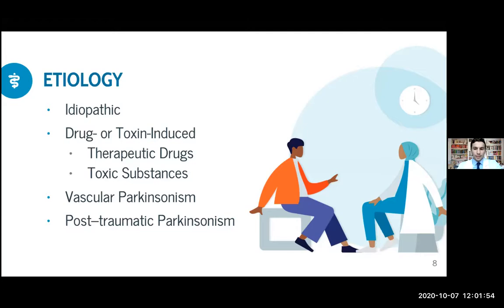Now we have post-traumatic Parkinsonism. It usually manifests in people exposed to recurrent head trauma — usually people who engage in martial arts and contact sports. They develop a syndrome known as chronic traumatic encephalopathy, which consists of Parkinsonism, dementia, behavioral disturbances, and cerebellar deficits. You might have seen some professional sportsmen develop this syndrome.